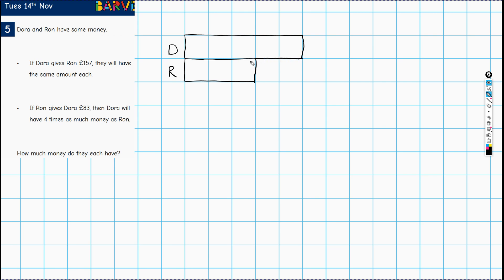And what are we told? We are told that if Dora gives Ron £157, they will have the same amount each. Now, what does Dora have? This bit here is what she has that's more than Ron's. And hopefully you can tell, how much would she have to give to Ron so that they have the same amount? Well, this is where it would end up, wouldn't it?